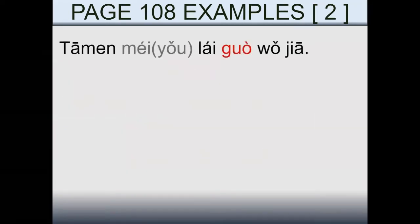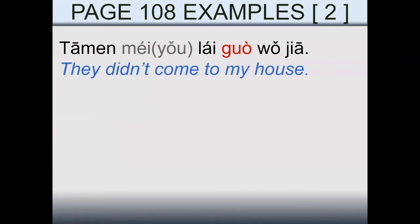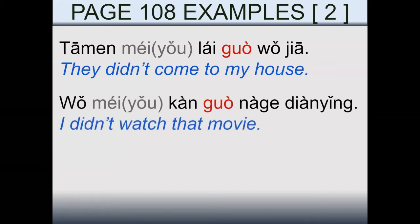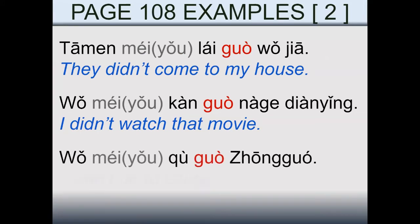Now, examples with the negative. 他们没有来过我家 — they didn't come to my house. Here we have 没有, but we can omit 有 and just say 没; both are correct. 我没有看过那个电影。 我没有去过中国 — I didn't go to China. The point is that one never had the experience of doing this.